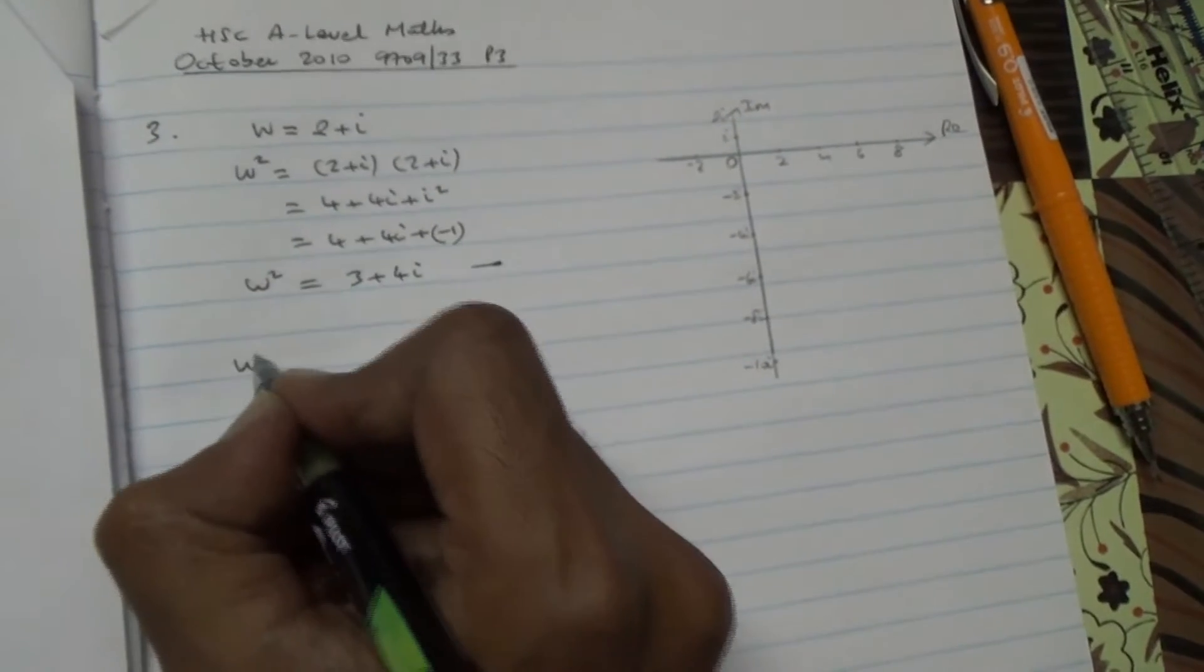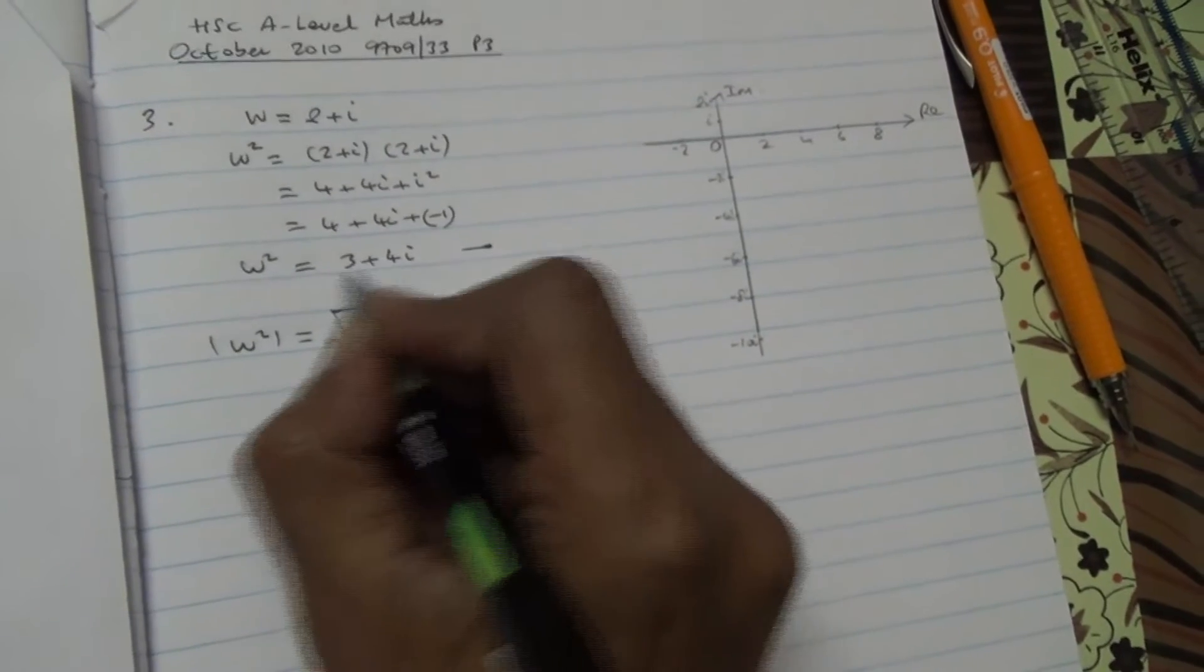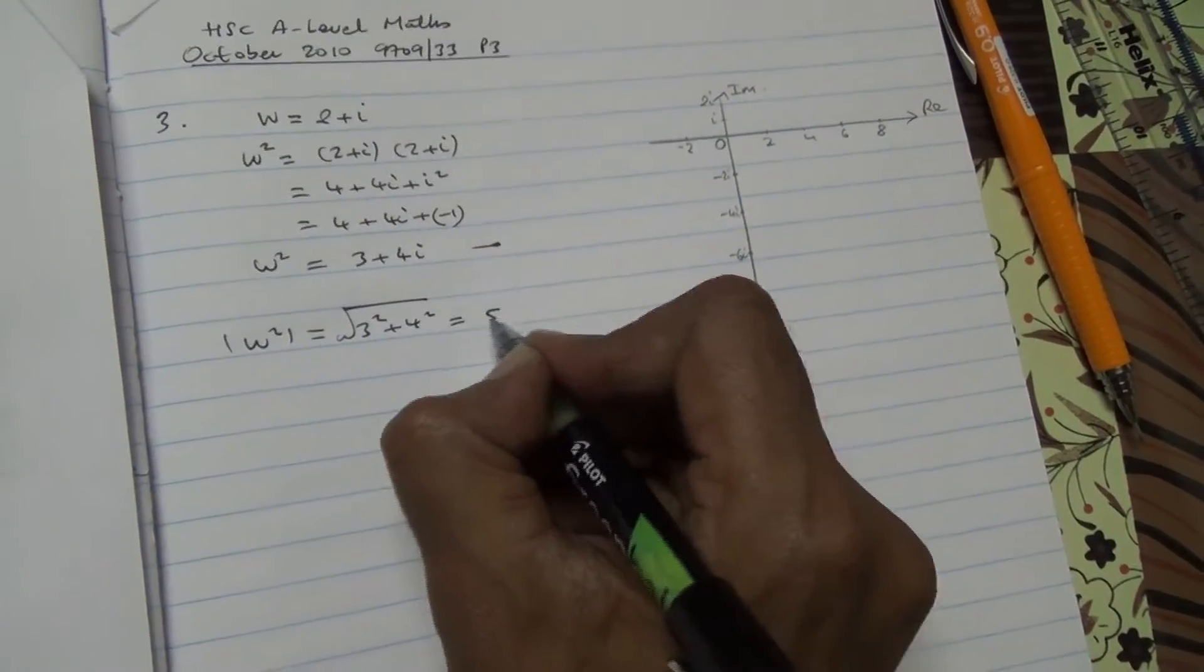W square and the mod of w square is going to be 3 squared plus 4 squared. All right, 3, 4. So it's going to give us 5.